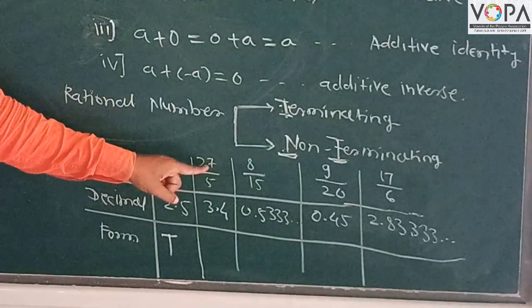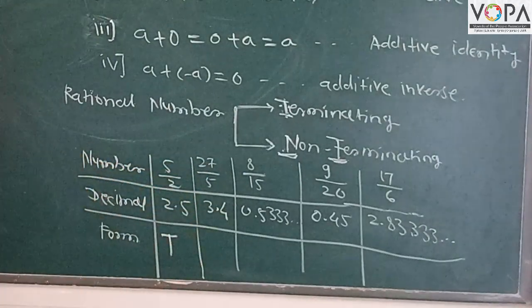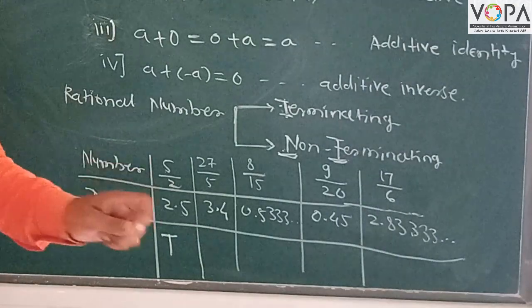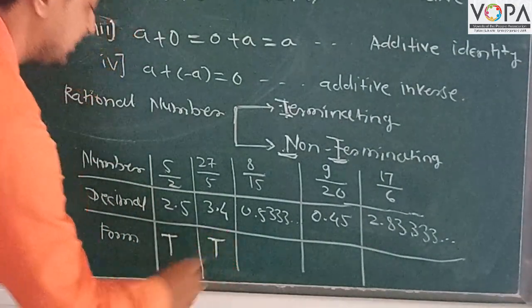3.5 is a terminating term and we write here capital T.